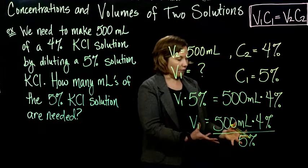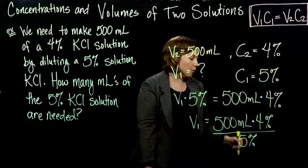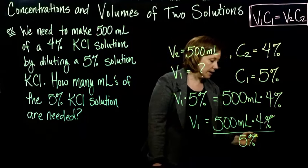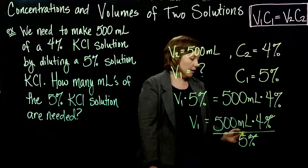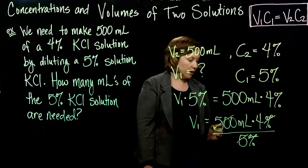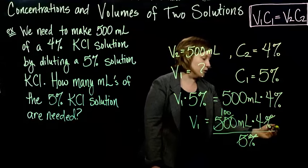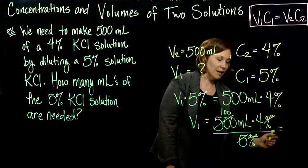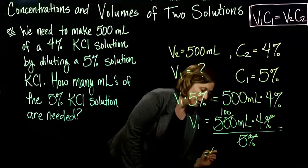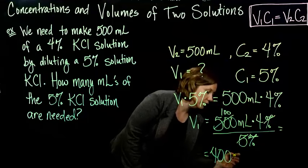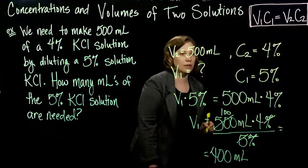And so now I just have to simplify all this. It looks terrible, but it's really not that bad, because what happens to the percents, they cancel out. I can do the 5 into 500, and it leaves me with 100, and then I have 100 milliliters times 4, which gives me 400 milliliters when it's all done and said.